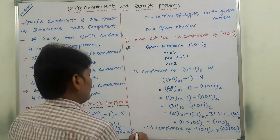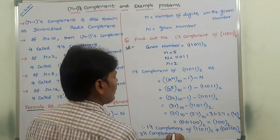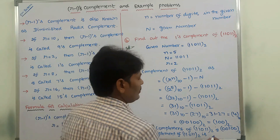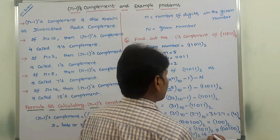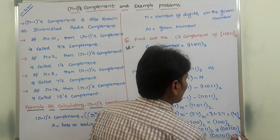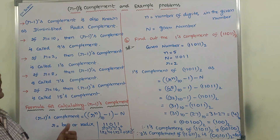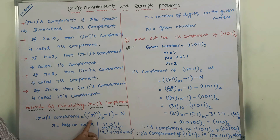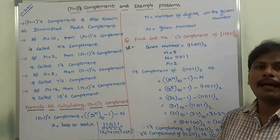We have already obtained the 1's complement. Then the 2's complement of 11011 base 2 equals 1's complement plus 1. The 1's complement value is 4, so 4 plus 1 is 5. In binary, 5 is 00101 base 2. So the 2's complement is 00101 base 2, or simply 101 base 2. In this way, we find the 9's complement and 1's complement using this formula. Without using the formula, an alternate method will be discussed in the next video.